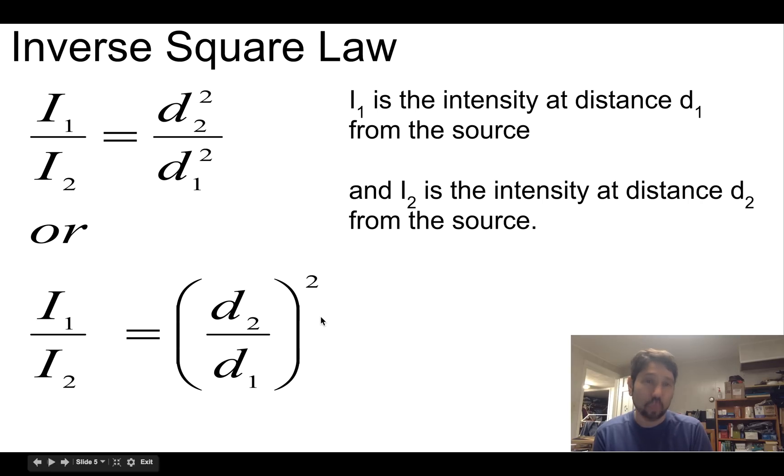I1 is the intensity measured at distance 1. And I2 is the intensity measured at distance 2.